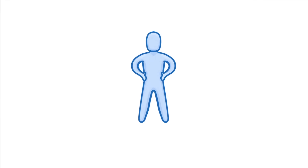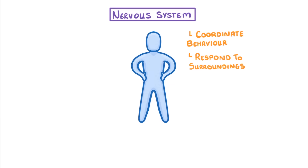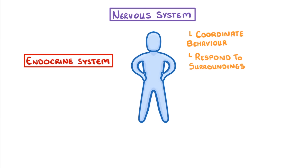When it comes to large multicellular organisms like humans, the different parts of our body need some way of communicating with each other, so that we can coordinate our behaviour and respond to our surroundings. To do this, we rely on two different organ systems: the nervous system, which we'll discuss here, and the endocrine system, which we'll see in another video.